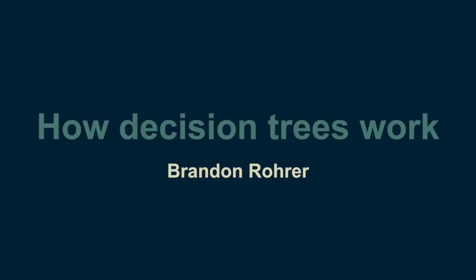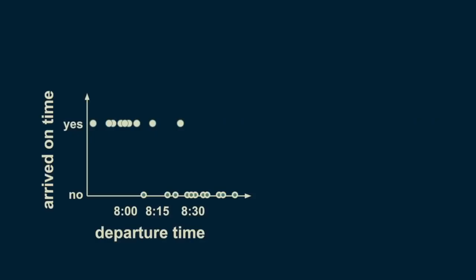The concept behind decision trees is refreshingly straightforward. Imagine creating a dataset by recording the time you left your house and noting whether you arrived at work on time. Looking at it, you can see that for the most part, departure times before 8:15 result in punctuality, and departure times after 8:15 result in tardiness.